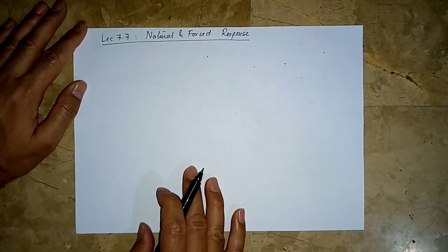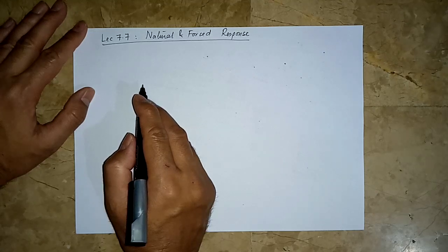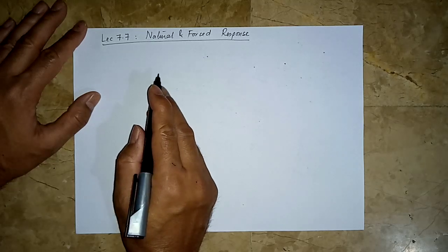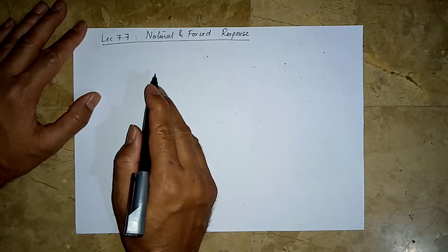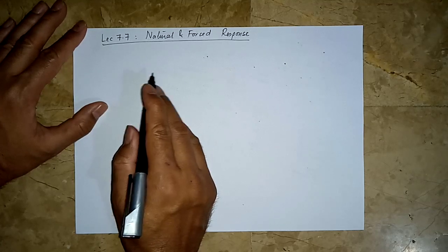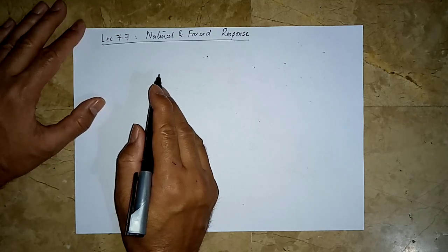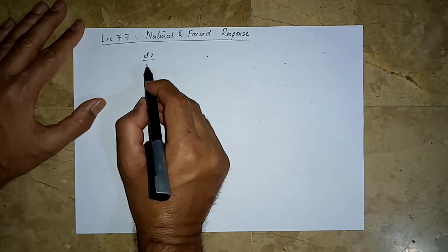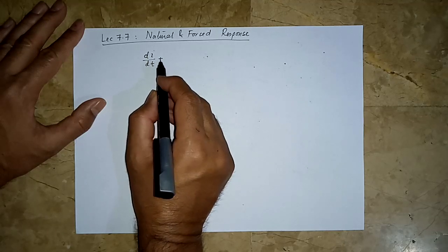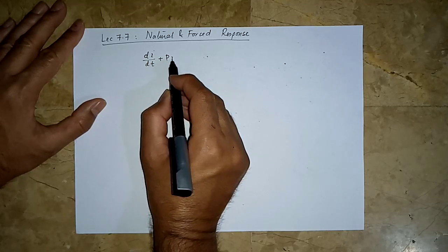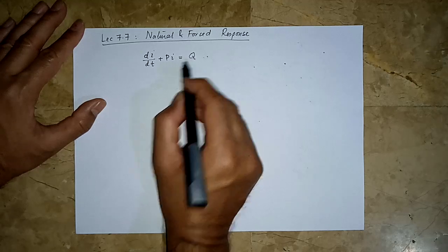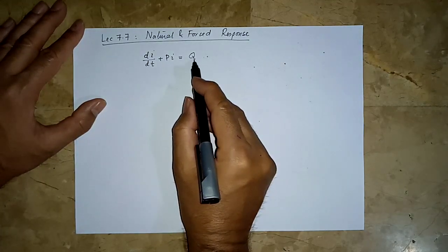Let us now look at the natural and forced response once again from a different perspective. We will try to understand everything on this simple RL circuit. The forced response is what we are looking at right now, but let us discuss from a mathematical point of view how we can arrive at and understand the natural response and forced response. A typical differential equation from a mathematics point of view would look something like this: we have a constant p, then i — so this term has a derivative of i, this has i itself, and then we get something like q here.